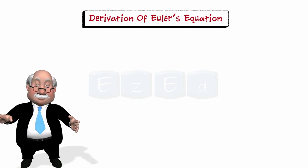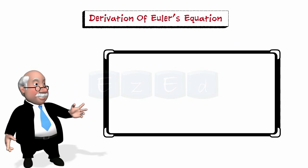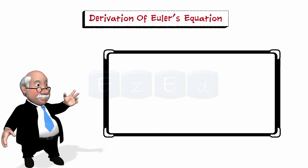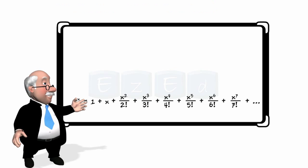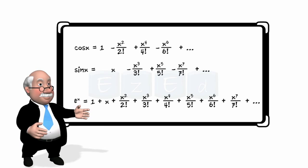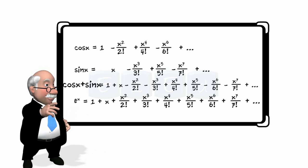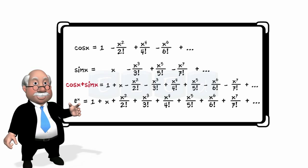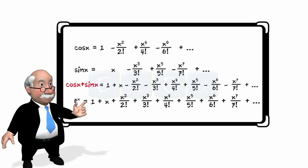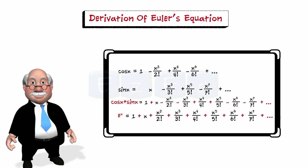I will tell you everything, but first take a look at the series expansion of the exponential function e^x and the trigonometric functions sine x and cosine x and their addition. Compare cos x plus sine x with e^x. Cos x plus sine x is almost identical to the series of e^x — all terms in the series are exactly the same except signs.